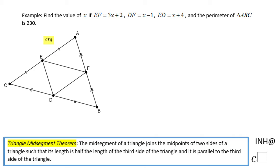Welcome or come back to Math Help at C squared. In this example, we need to find the value of x if EF = 3x + 2, DF = x - 1, ED = x + 4, and the perimeter of triangle ABC is 230.